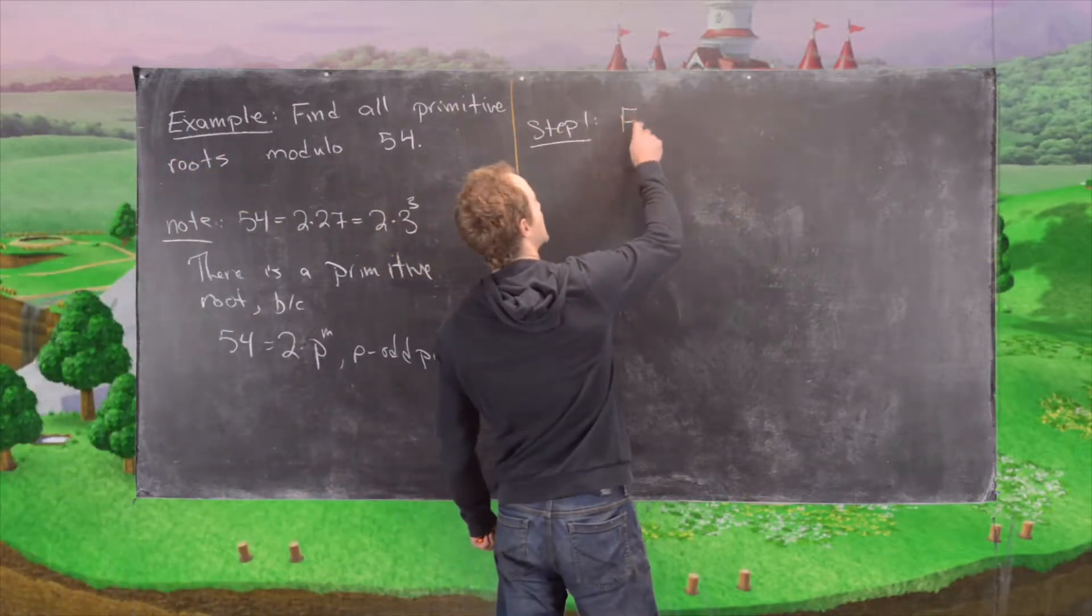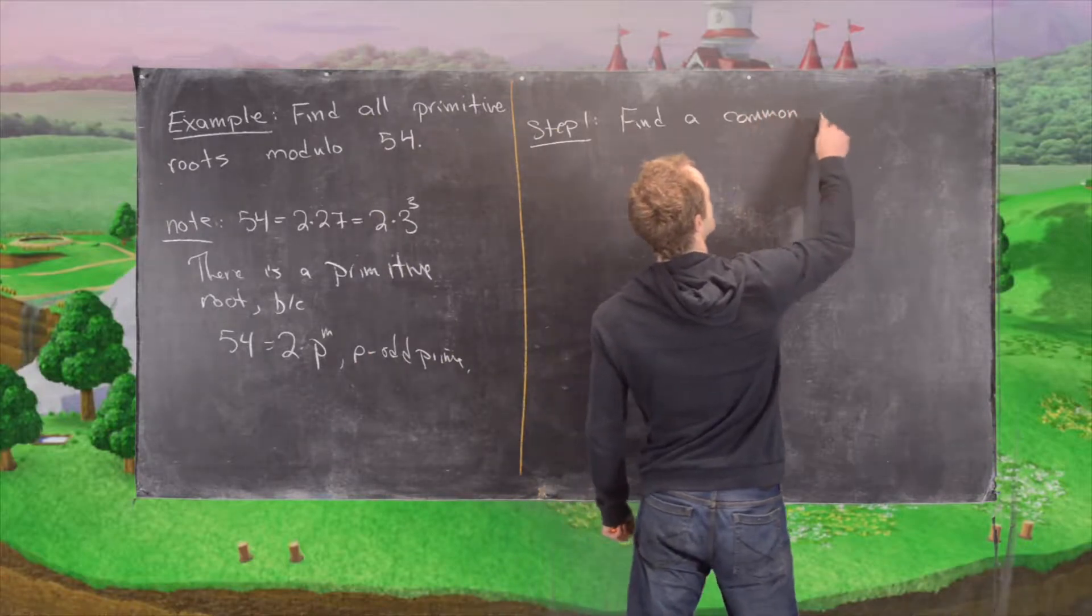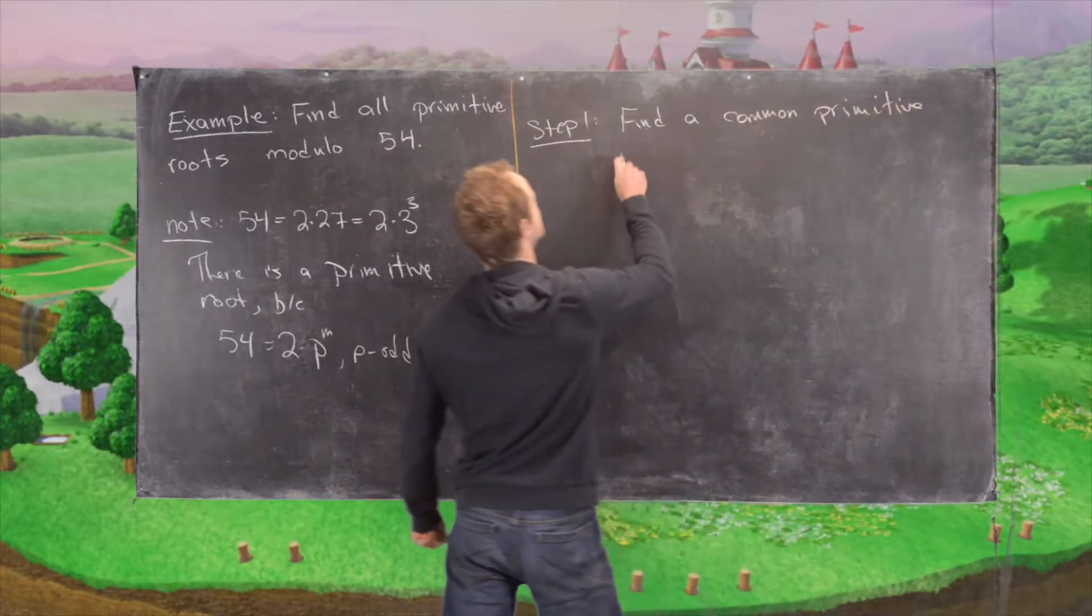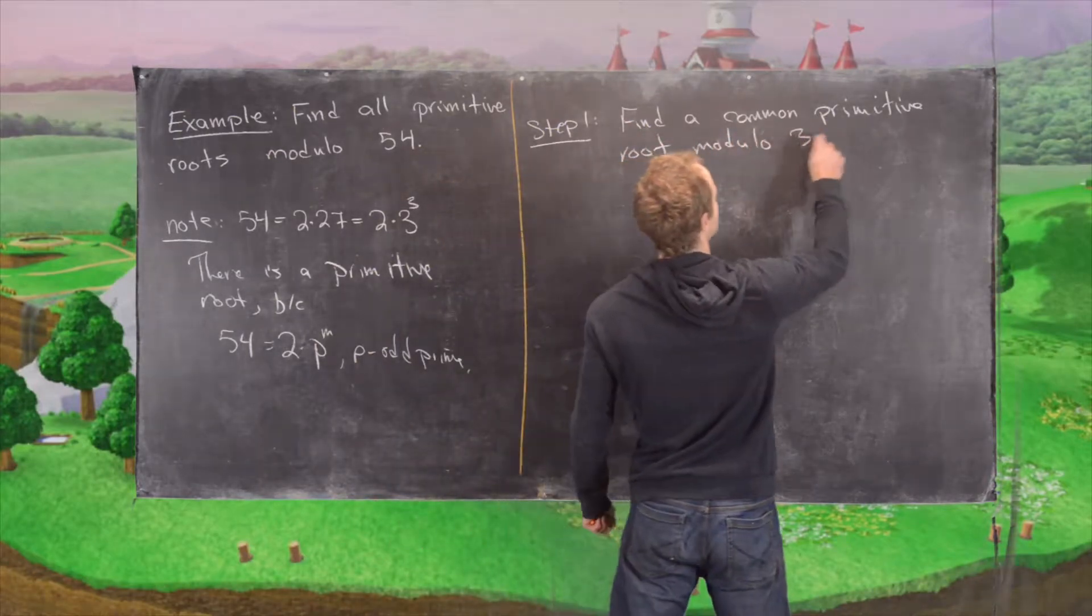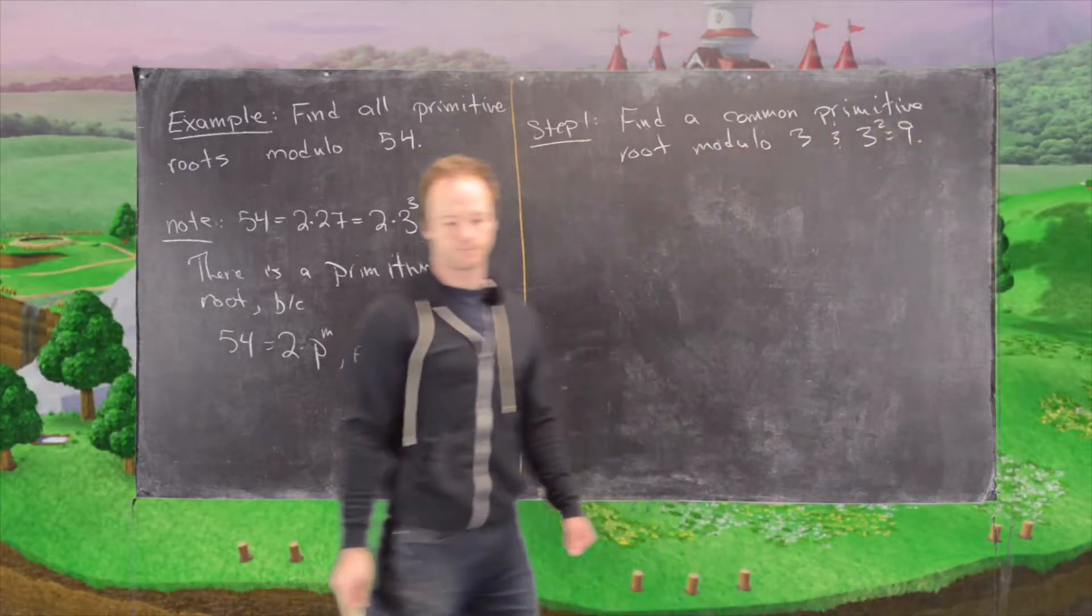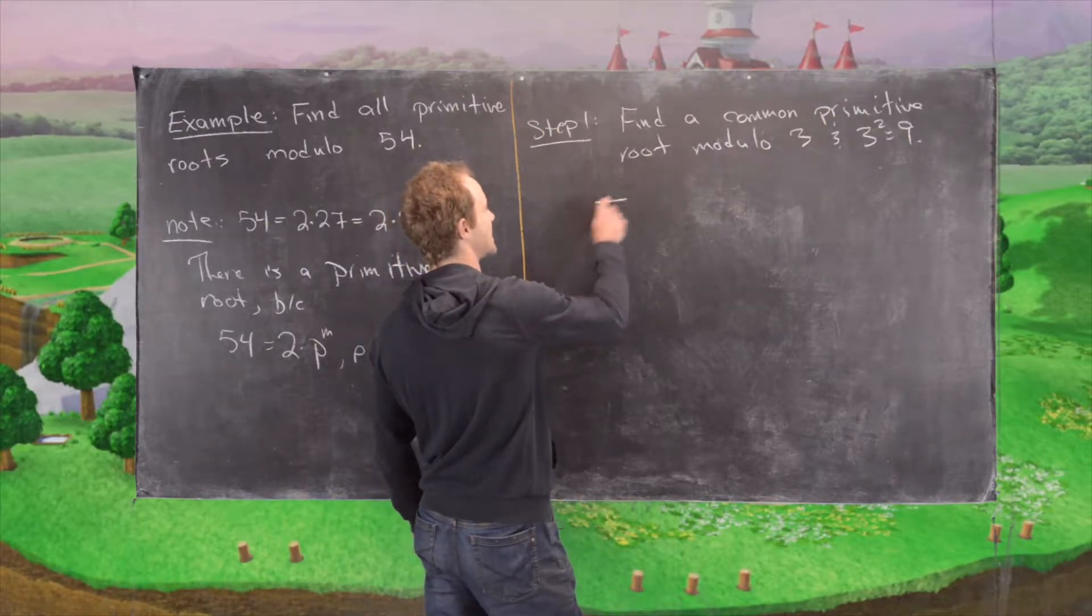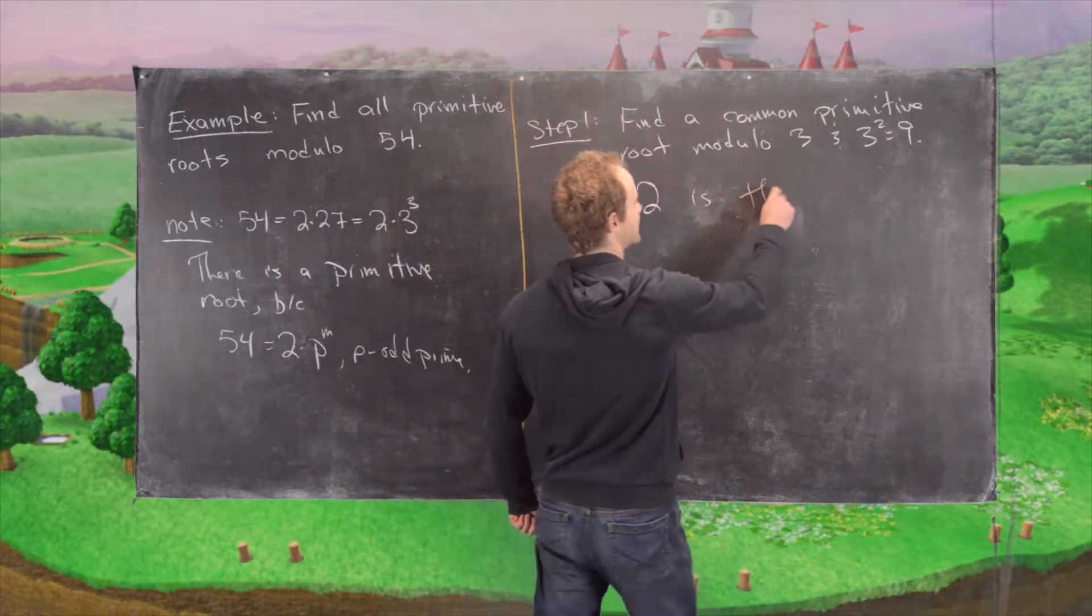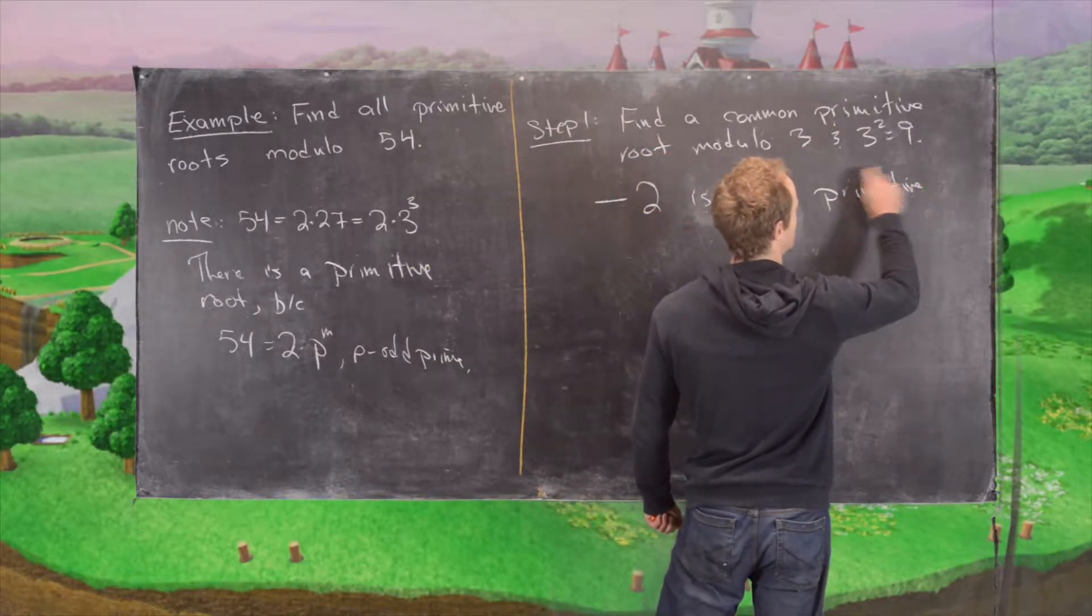So we want to find a common primitive root modulo 3 and 3 squared, which is obviously 9. And it's easy to check here that 2 is this primitive root.